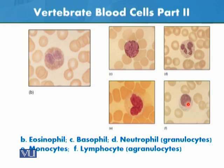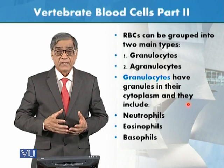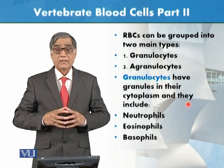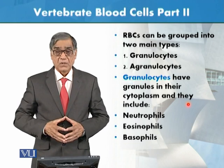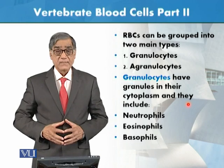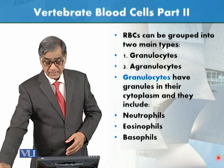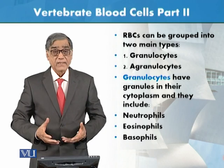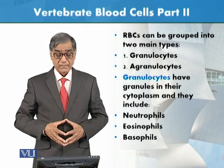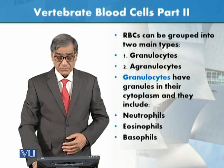Experts can examine blood cells, identify nuclei and cell shapes, and determine which cells are present. These are diagnostic features used to study diseases. WBCs are grouped into two main types: granulocytes, which have granules in the cytoplasm and include neutrophils, eosinophils, and basophils.